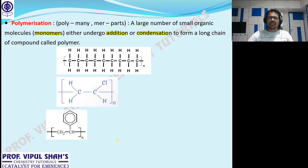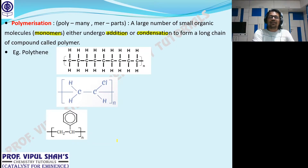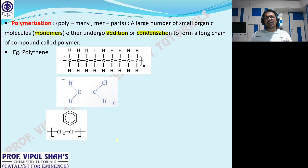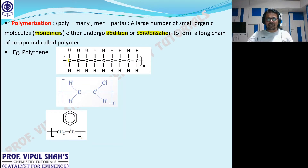I've given you the structures of three polymers — you don't have to remember any of them right now, just the names. All of them we use in daily life. First: polythene — plastic bags. The monomer is one molecule of ethene, CH₂=CH₂. When many ethene molecules undergo addition, the double bond breaks, it becomes a single bond, and many units attach together: -CH₂-CH₂-CH₂-CH₂- and so on, N times. That's polythene.